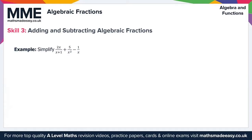Our final skill is adding and subtracting algebraic fractions. We need to simplify: 2x over (x plus 1), plus 5 over x squared, minus 1 over x. We start by getting all three fractions over a common denominator. For the first fraction with denominator (x plus 1), we multiply numerator and denominator by x squared and by x — the denominators of the other two fractions.